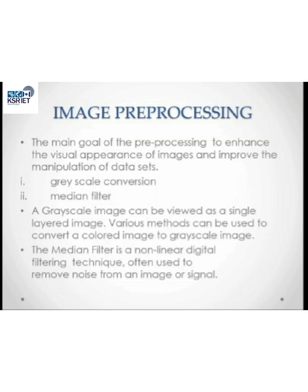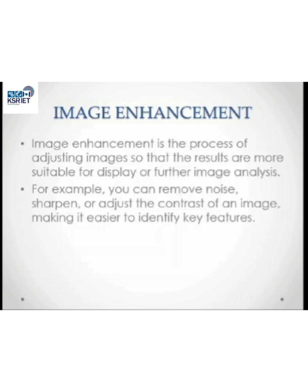Image preprocessing involves two conversions: grayscale conversion and median filter. Grayscale conversion is used to convert a color image to a grayscale image. Median filter is a non-linear digital filtering technique. Image enhancement is the process of adjusting an image so that the results are more suitable for display or further image analysis. We can remove noise, sharpen, or adjust.